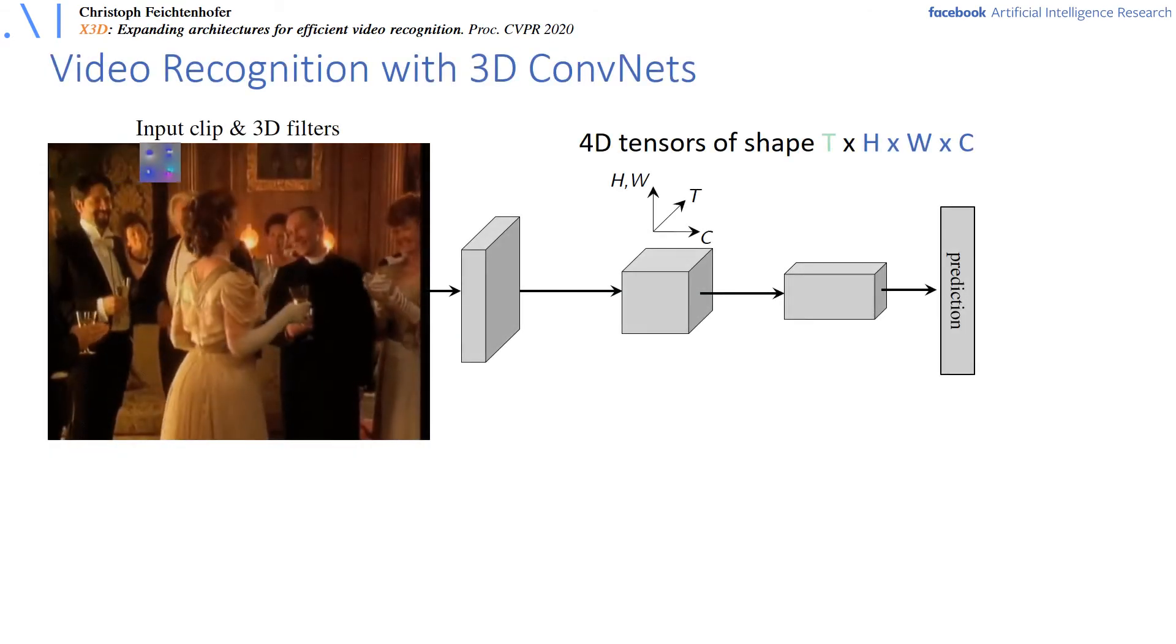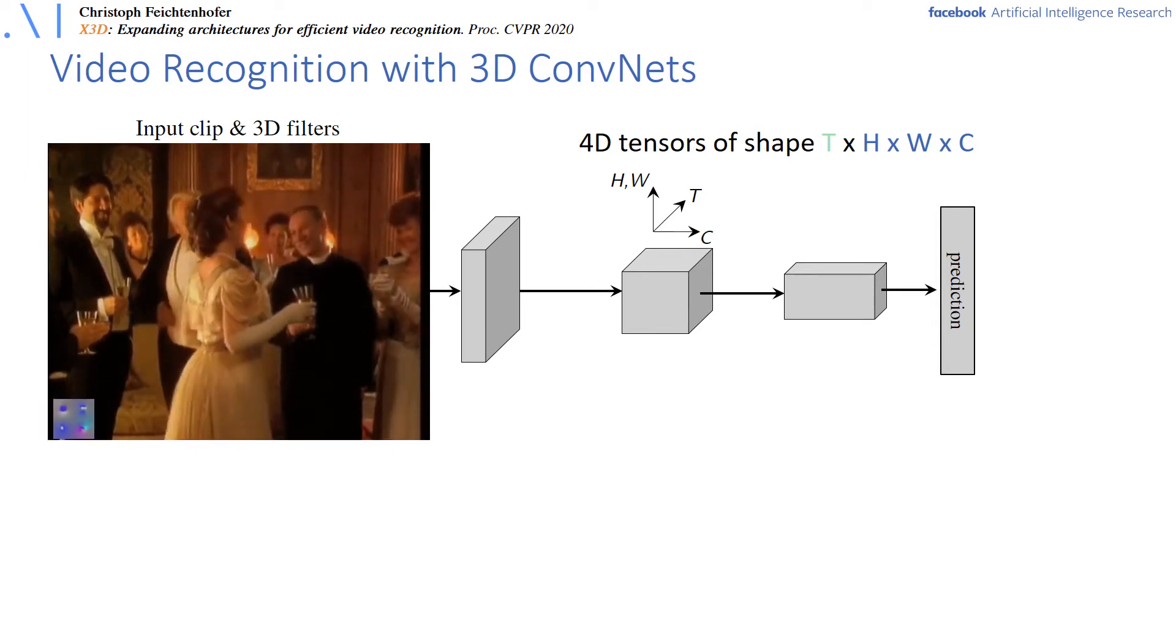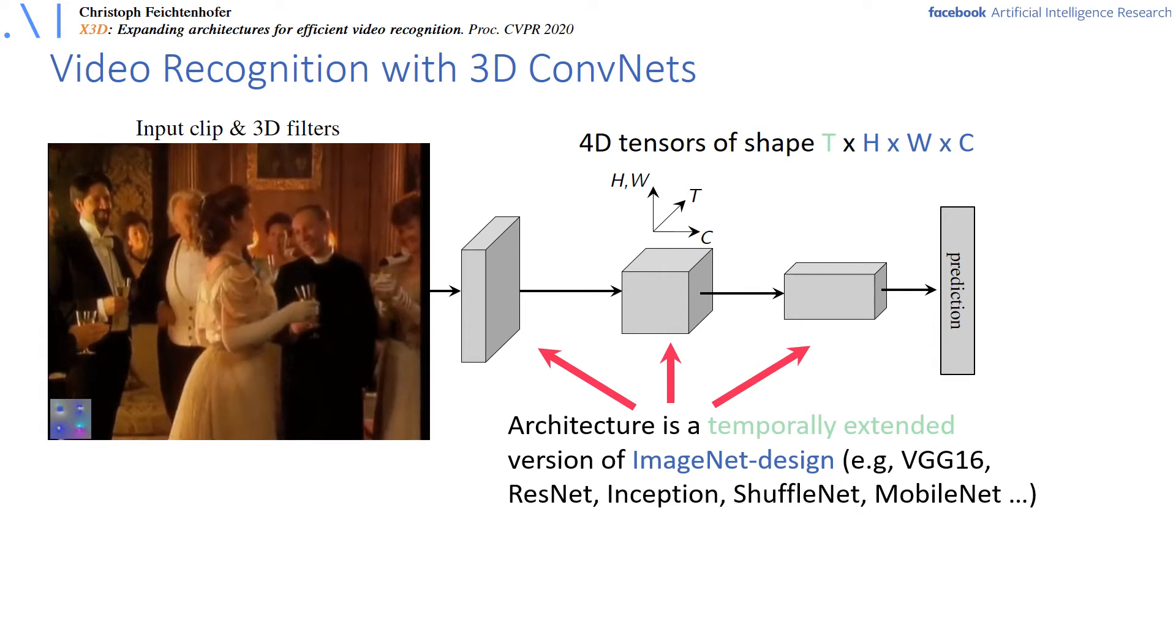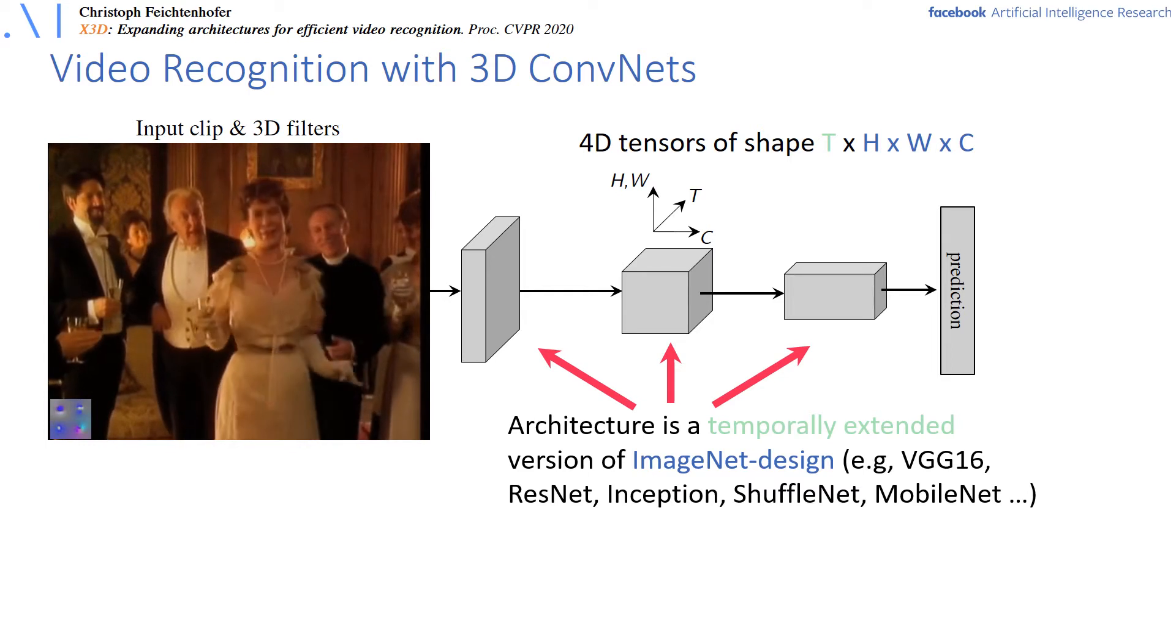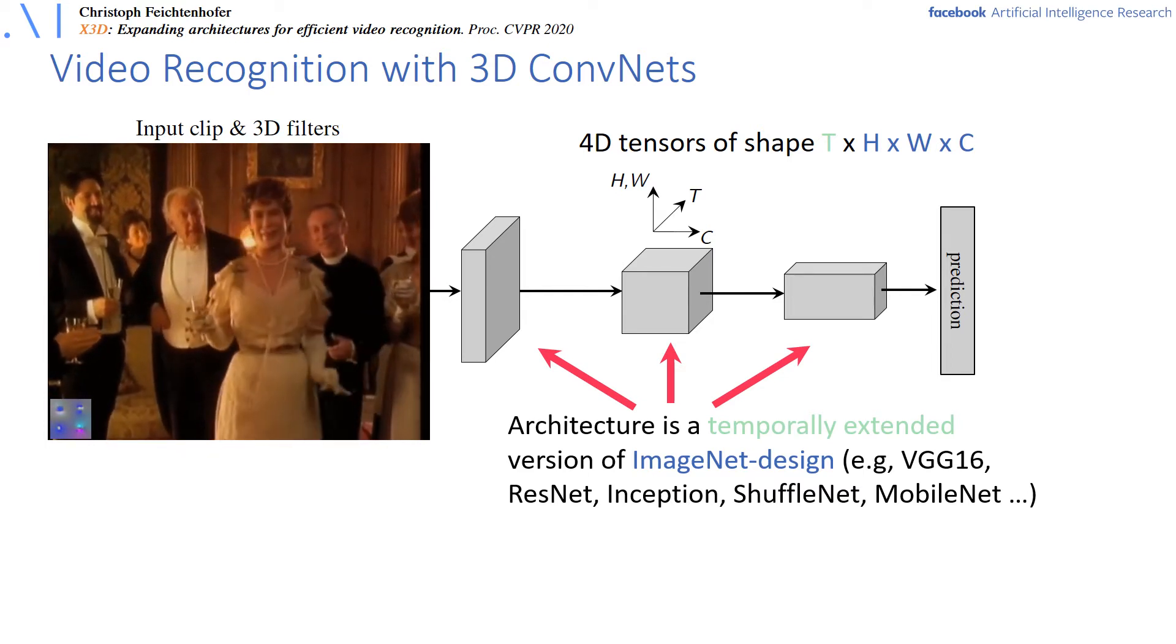For video recognition, an intuitive way is to convolve an input video clip with 3D spatiotemporal filters. This is typically done by extending an image-based network by a third dimension. Basically, nearly all video classification backbones are temporal extensions of ImageNet design.